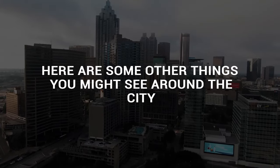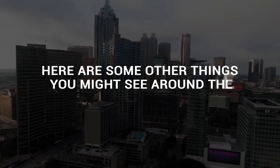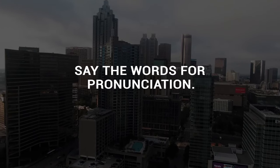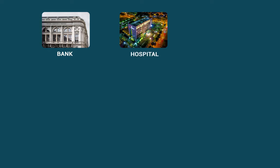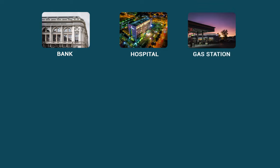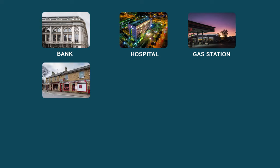Here are some other things you might see around the city. Say the words for pronunciation. Bank — a bank is where you deposit money. Hospital — a hospital is where you go when you're hurt or sick. Gas station — a gas station is where you get gasoline for your car. Post office — a post office is where you mail letters and packages.